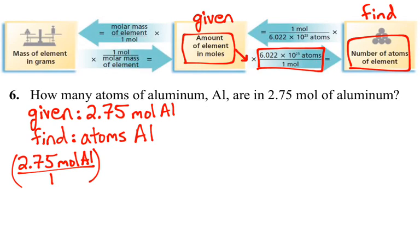Remember, 6.022 times 10 to the 23rd is a special number called Avogadro's number. And it represents the number of particles or the number of objects in one mole of a given substance or a given thing.